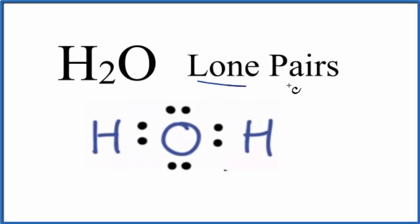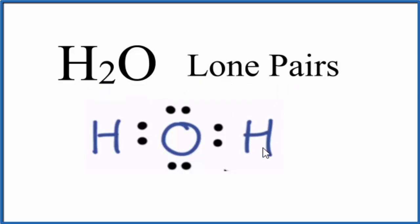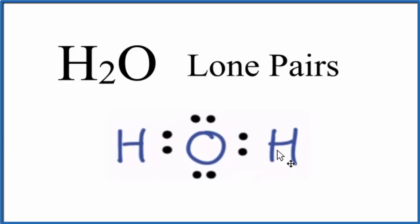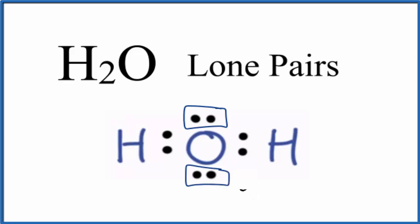Let's talk about the number of lone pairs for H2O, water. Lone pairs are sometimes called unbonded pairs of electrons. So we have this Lewis structure here. If you need help drawing the Lewis structure for water, there's a link in the description. When we look at water here, we have these electrons here and these electrons here. They're not bonded to anything — that means they're lone pairs. So we have two lone pairs for water.